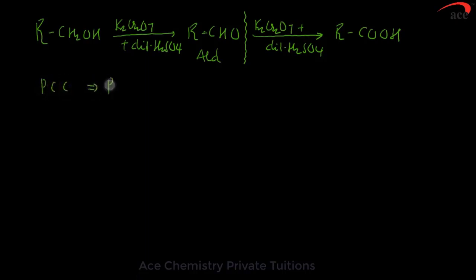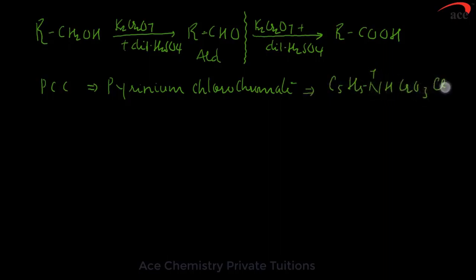PCC is pyridinium chlorochromate. Even we are familiar with the formula, this should be C5H5N plus HCrO3Cl minus. The other one is PDC.